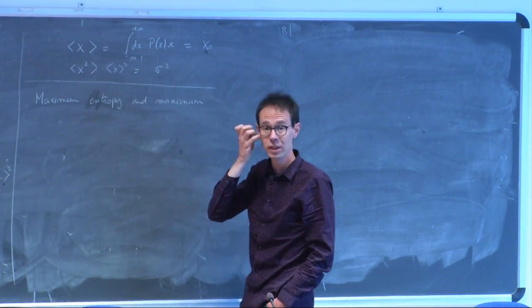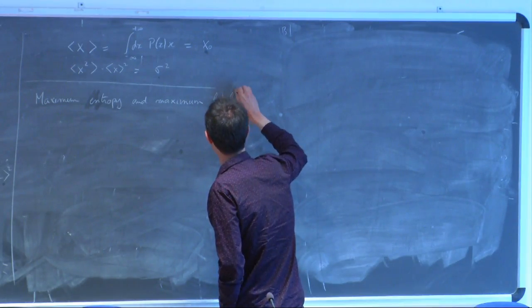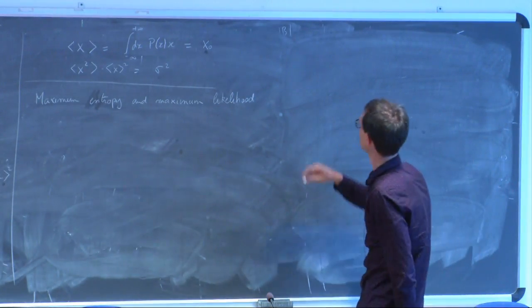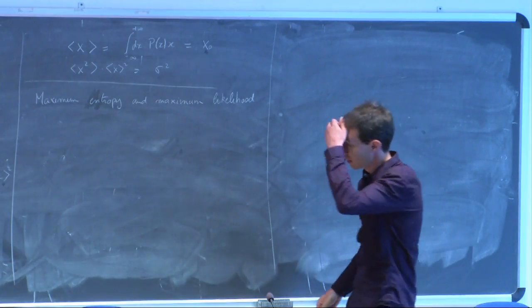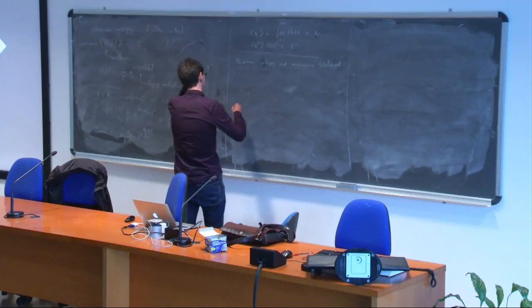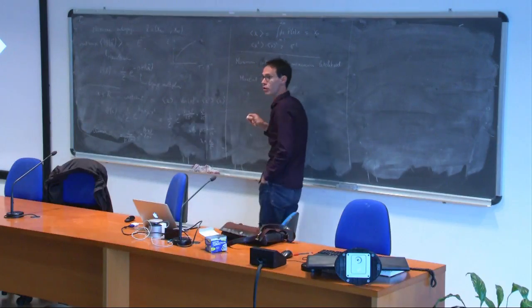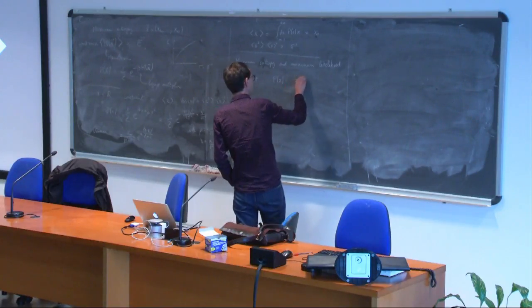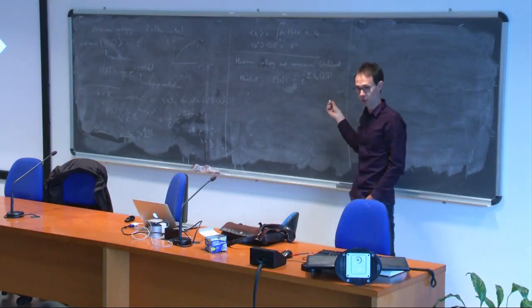In the previous lectures, we talked quite a bit about maximum likelihood, and here I introduced a new concept which is maximum entropy. What's the relationship between these two? In fact, there's a strong one — it's almost equivalent. It's just a difference in the formulation of the problem. When we did maximum entropy, we said that the distribution would take this exponential form — an exponential over a linear combination of my observables.